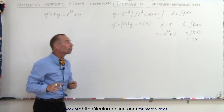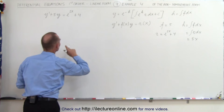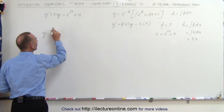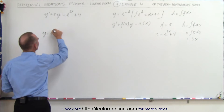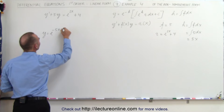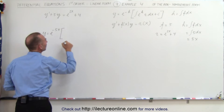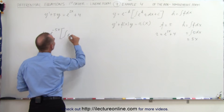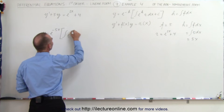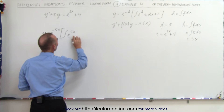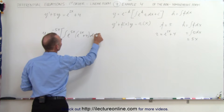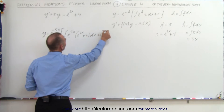Now we're ready to plug those into our general solution. So y is equal to e to the minus h — h is 5x, so e to the minus 5x — times the quantity: the integral of e to the h, which is e to the 5x, times r, where r equals e to the 2x plus 4, times dx, plus a constant of integration.